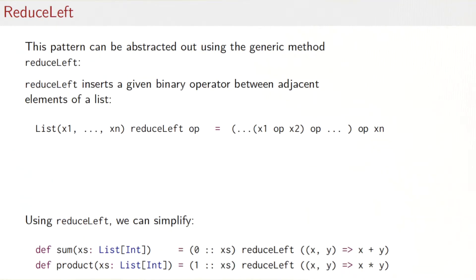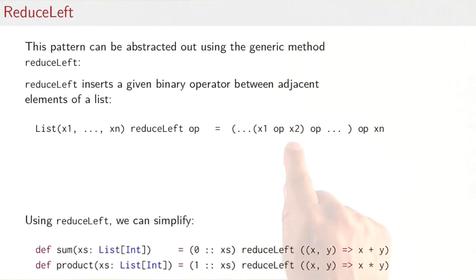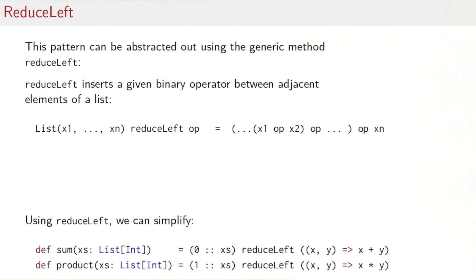Again, you might ask how can I generalize that pattern? And in fact it can be abstracted using the generic method reduceLeft. So reduceLeft inserts a given binary operator between adjacent elements of a list. So if you have a list from x1 to xn and we say reduceLeft of an operator, then we would put that operator between each successive element of the list.